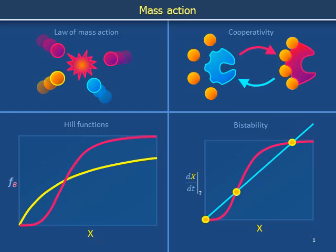In this set of videos, we will derive the law of mass action by viewing chemical reactions in terms of molecular collisions. We will use the law of mass action to describe cooperative binding, which can be parametrized using Hill functions. We will then show how cooperative binding can lead to bistability in protein levels in a cell.